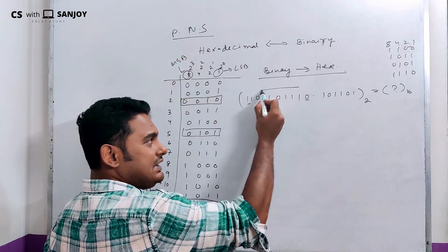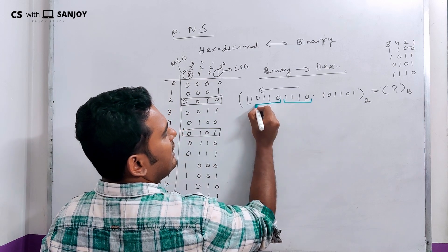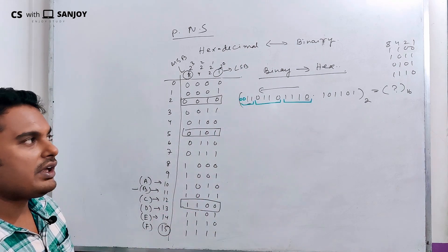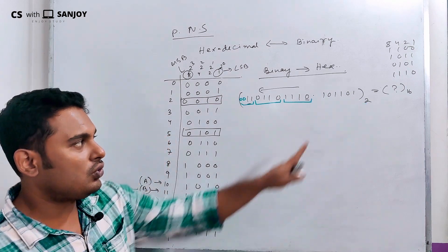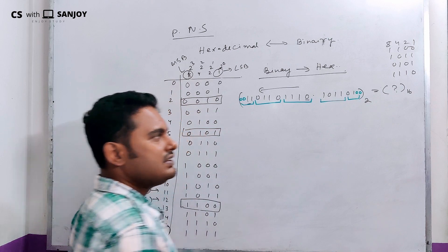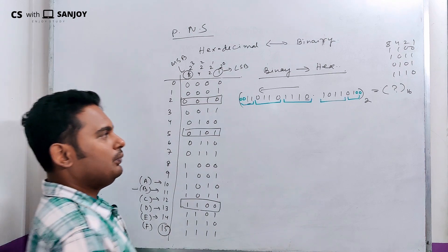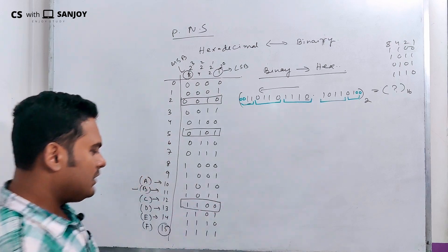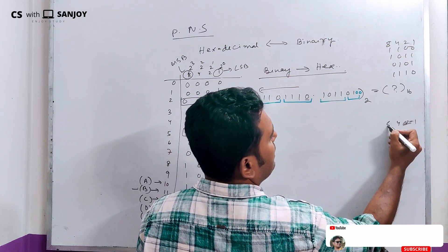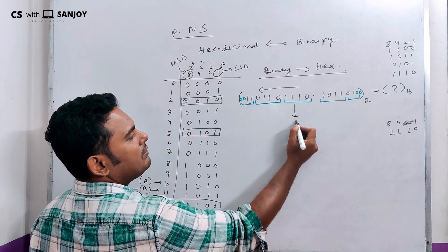When converting binary to hexadecimal, we group bits from the LSB side in groups of 4. For a binary number, we group from right to left in groups of 4. For example, 1110 → 8+4+2 = 14 → E. Then 0010 → 2. So the result uses the hex table to find each group's hex digit.